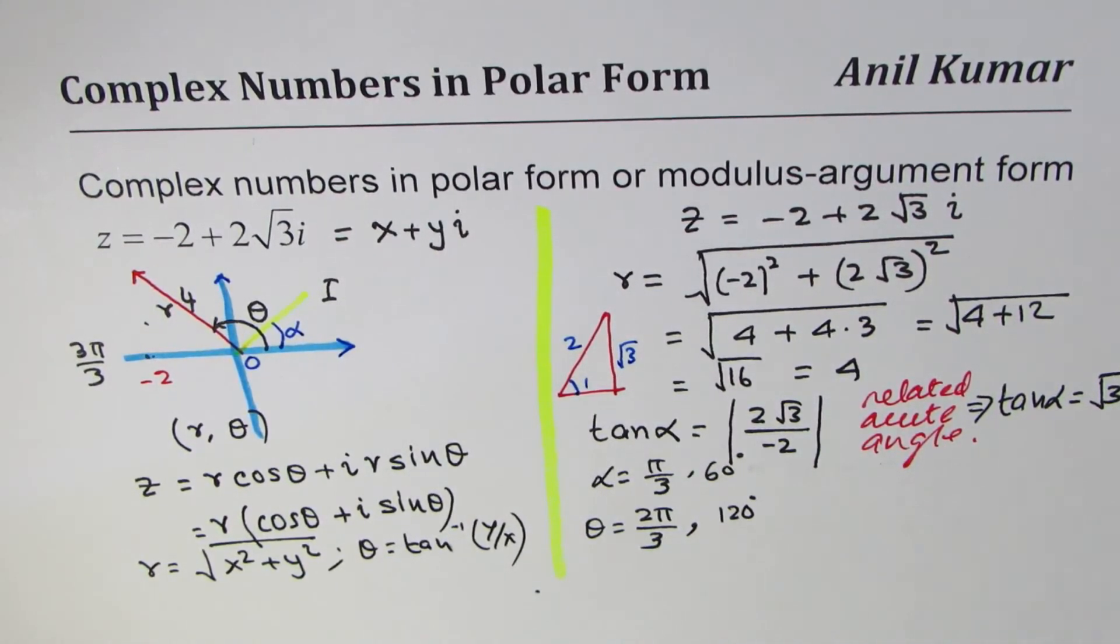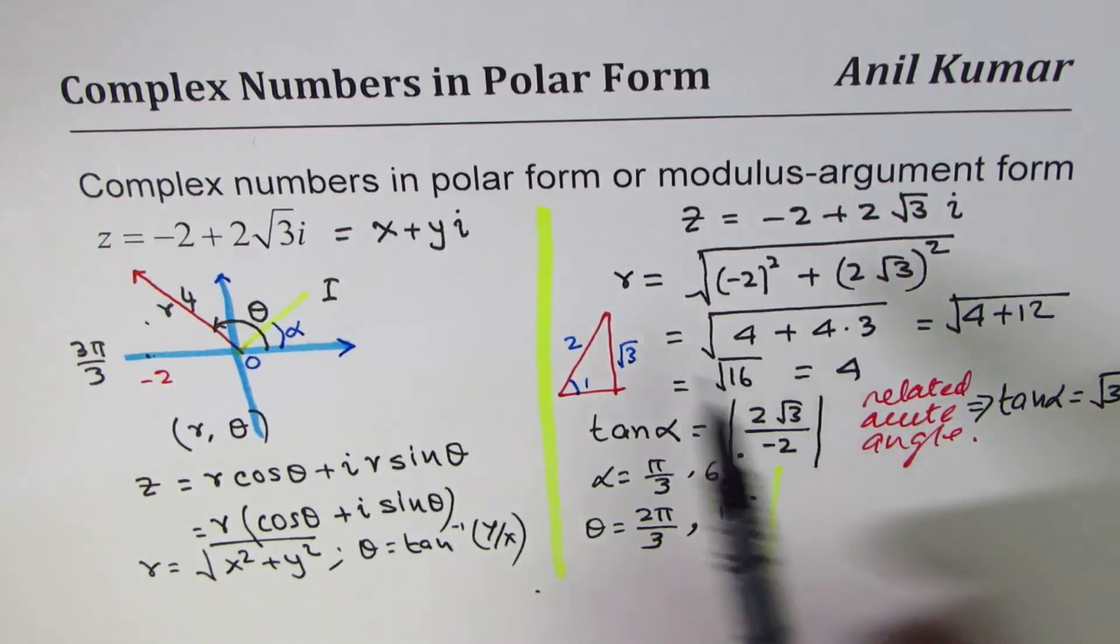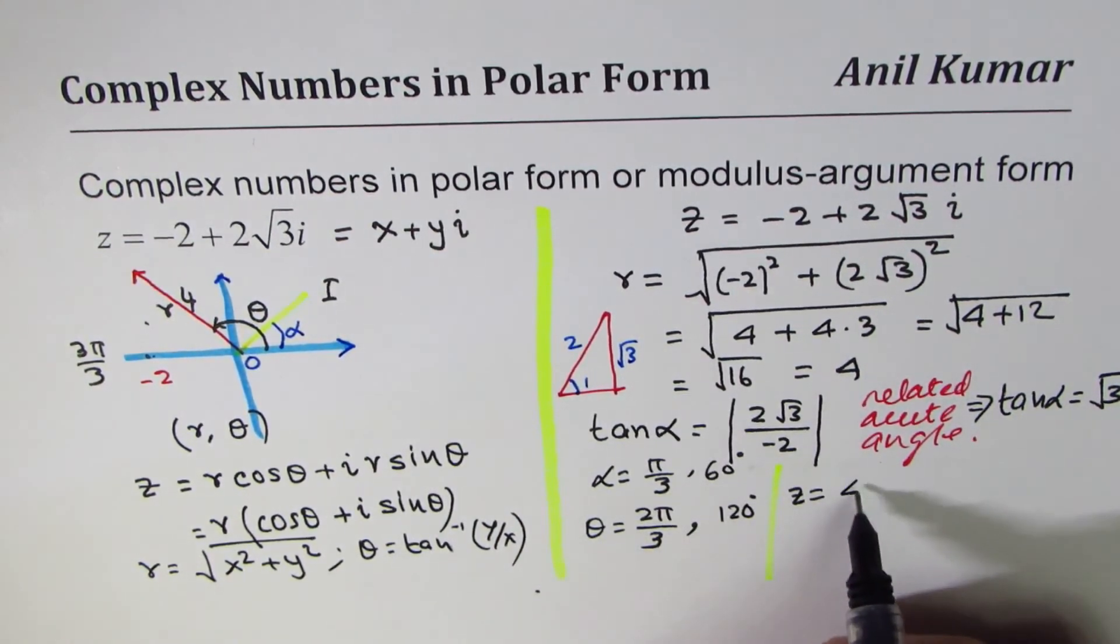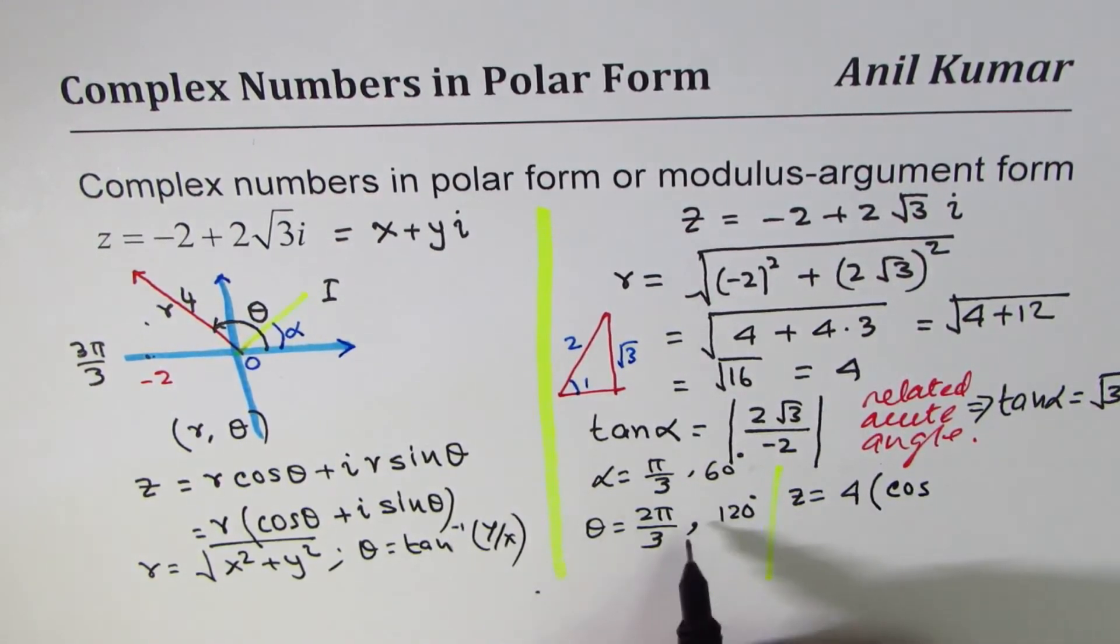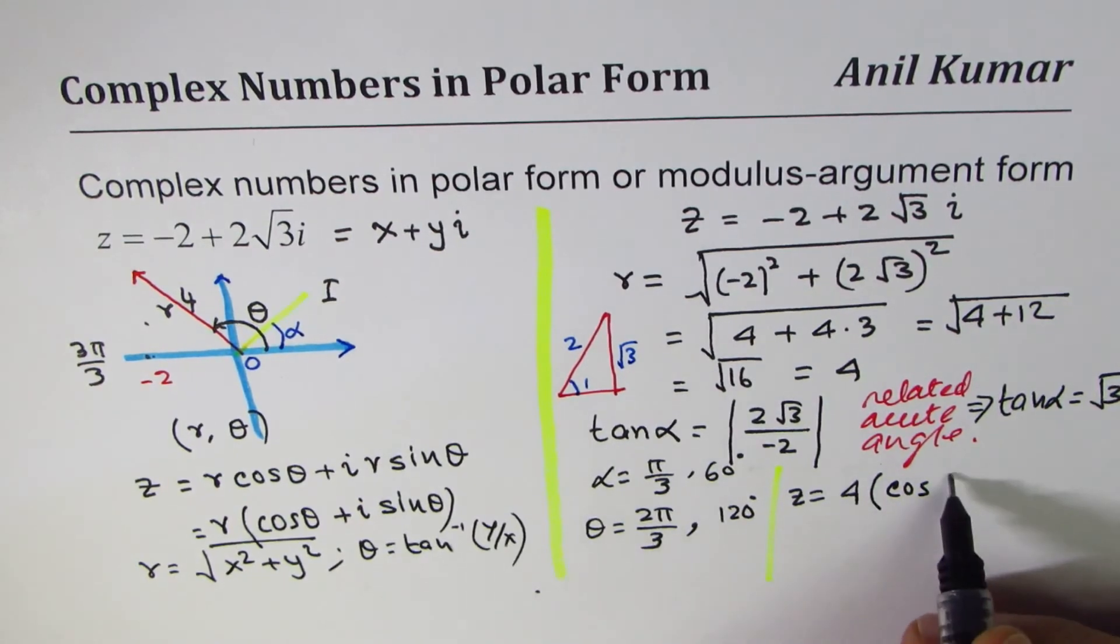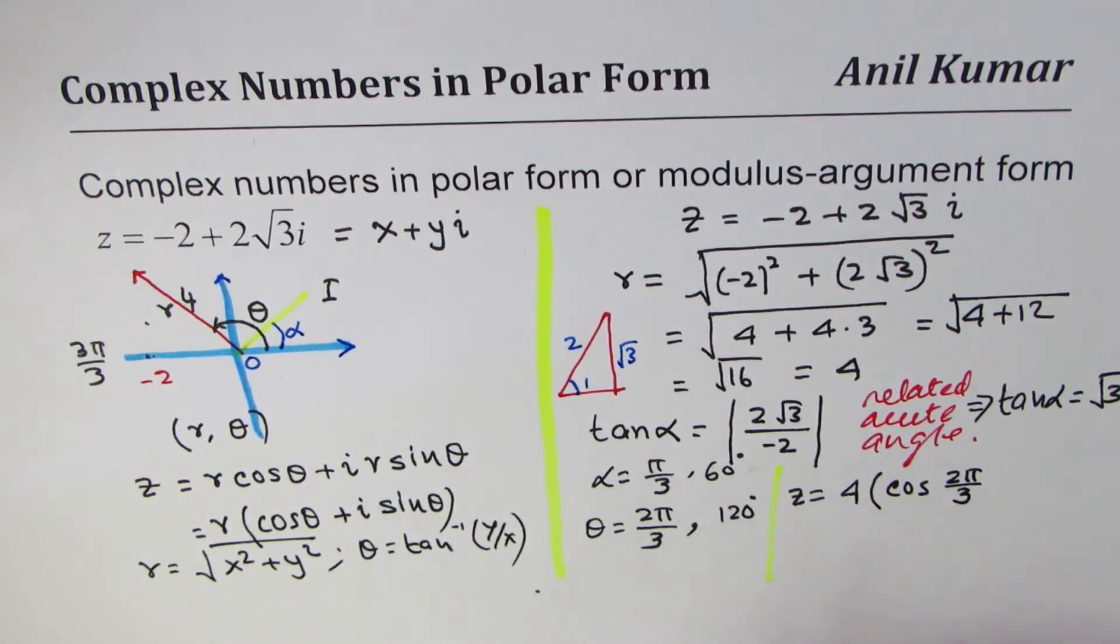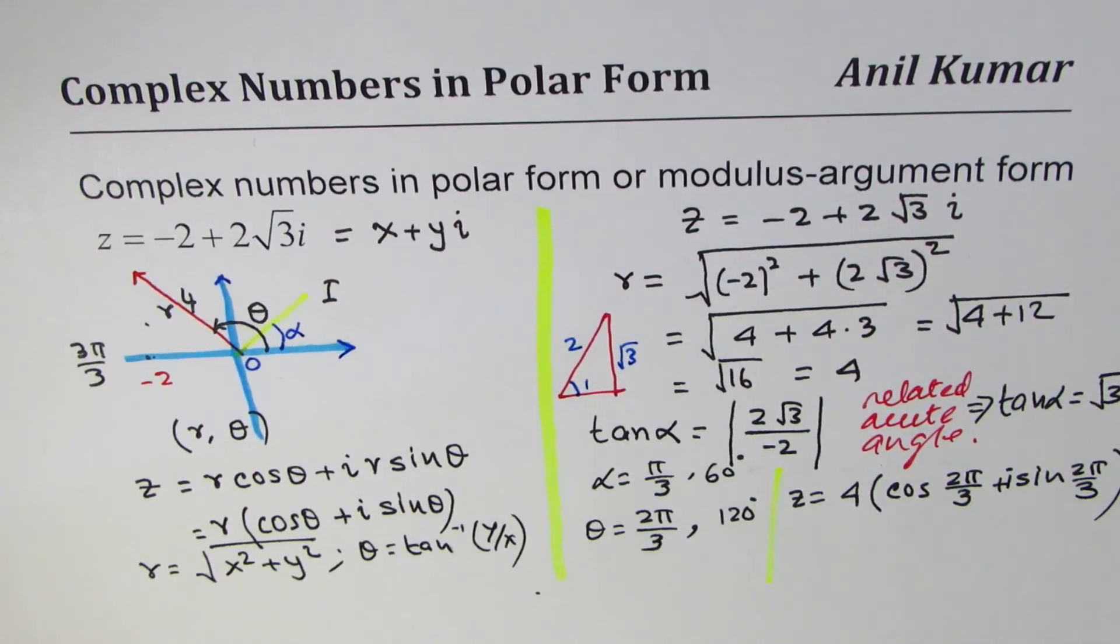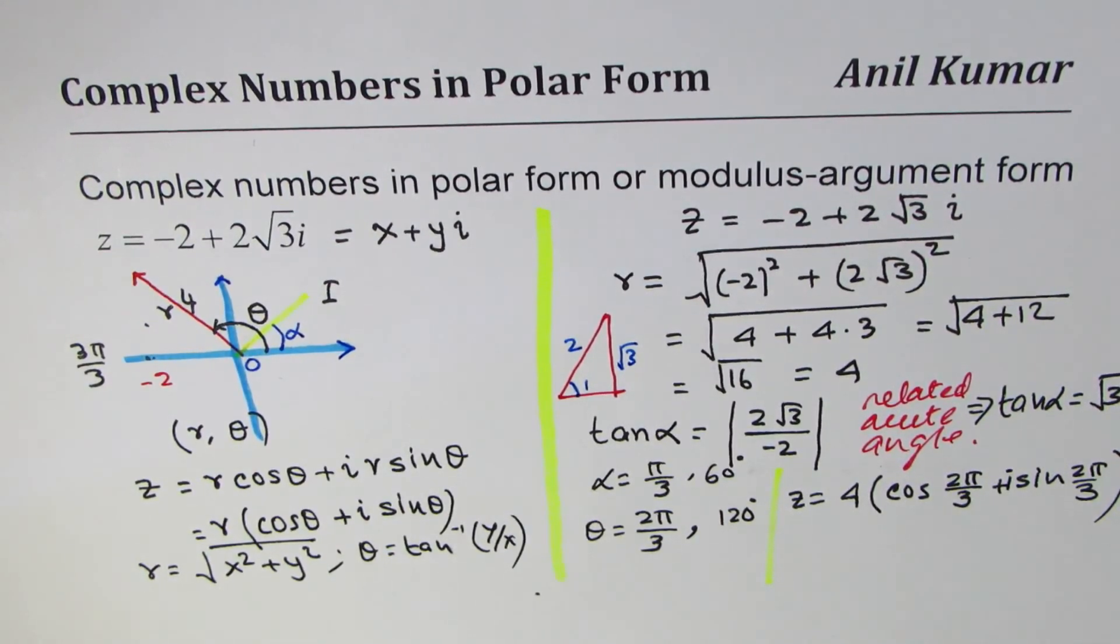Once we get r and theta, we can write down the polar form, which is z equals r value of 4, brackets, cos of, you can write in either, I'll prefer radians this time, so 2 pi by 3. Previous examples have taken degrees. Plus i sine, I should not forget. That's the complex part. i sine 2 pi by 3. So that becomes your polar form for the given complex number.